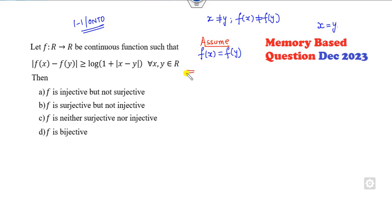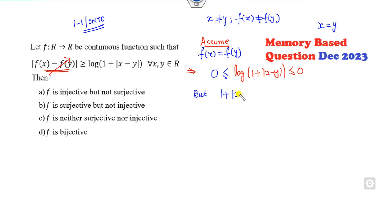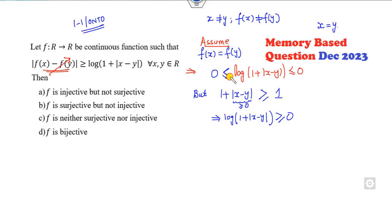Let's check whether it's 1-1. If F(X) and F(Y) are the same, then F(X) minus F(Y) equals 0, which means log(1 + |X - Y|) is less than or equal to 0. Now if I also prove this quantity is greater than or equal to 0, it must equal 0. Since |X - Y| is always a positive number, 1 + |X - Y| is always greater than or equal to 1, and since logarithm is an increasing function, log(1 + |X - Y|) is always greater than or equal to 0.